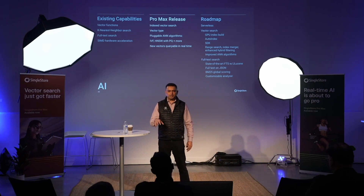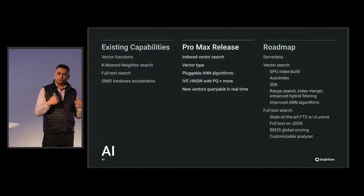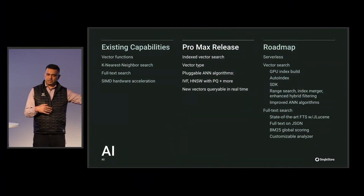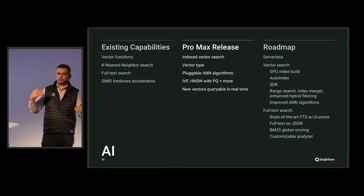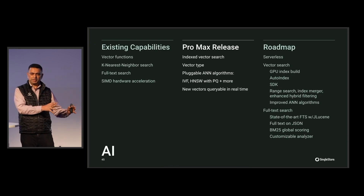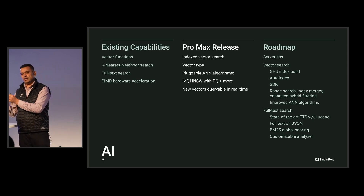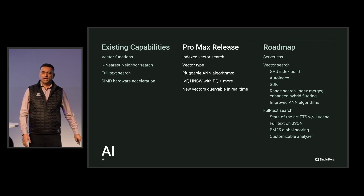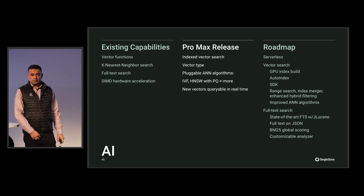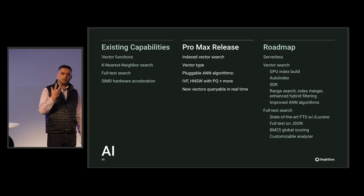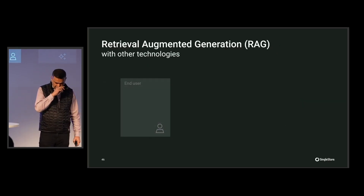We are also adding full-text search through Java Lucene. Today we have C Lucene available, and some of the demos which my friend Eric will show you are based on the current C Lucene capability. But within the next three months, you will see the latest and greatest version of Java Lucene, which will allow us to do a lot more interesting things.